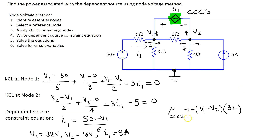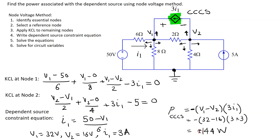Hence, we need to use the power formula with a minus sign. Substituting values, this gives minus (32 minus 16) times (3 times 3), which is minus 144 watts. This answer is negative because it signifies that this dependent source is actually supplying or generating power in this circuit.